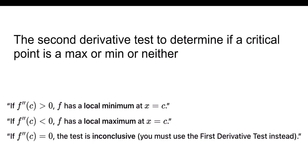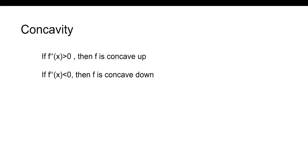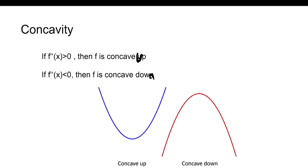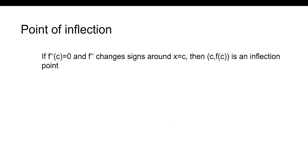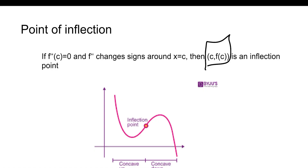Concavity is simple: if f''(x) is greater than 0, f is concave up (like a smile); if f''(x) is less than 0, f is concave down. For a point of inflection, f''(c) must equal 0 and f'' must change signs around x = c — then the point (c, f(c)) is an inflection point. This is basically when the graph changes concavity, for example going from concave up to concave down.